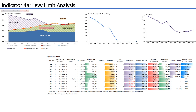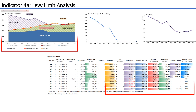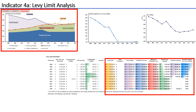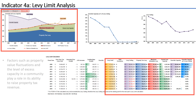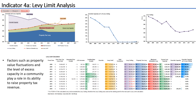This indicator measures the ability of a community to raise taxes within the limits of Proposition 2.5. The purpose of this indicator is to analyze the relationship that exists between the levy ceiling, levy limit, and levy. It also shows excess capacity, which is the difference between the amount a community can legally levy and the amount it chooses to levy. Factors such as property value fluctuations and the level of excess capacity in a community play a role in its ability to raise property tax revenue.